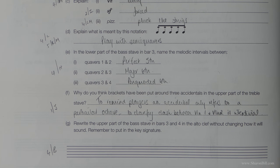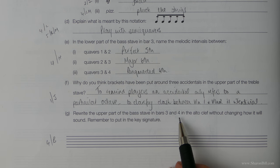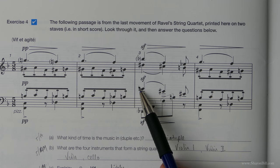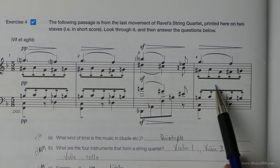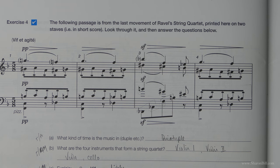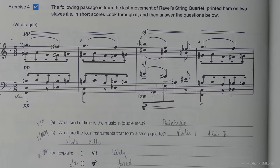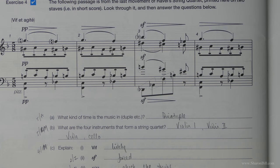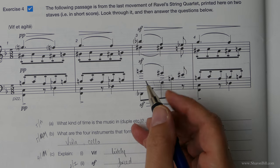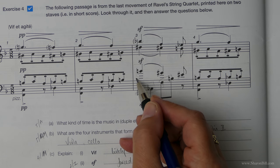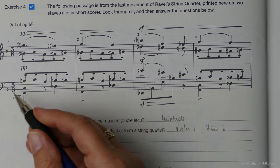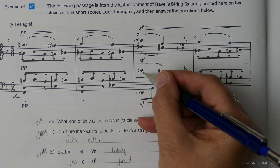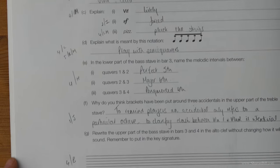And so now we're going to look at the upper part of the bass stave in bars three and four. So here, we're looking at the upper part where the stems are pointing upwards. And we're going to write that in the alto clef without changing how it will sound. We need to just figure out middle C as our anchor point. Here is middle C in the bass clef and we're on C, E, G, B above middle C.